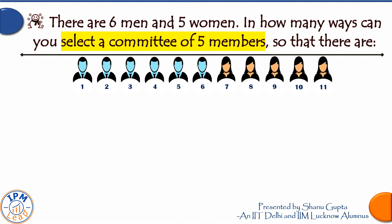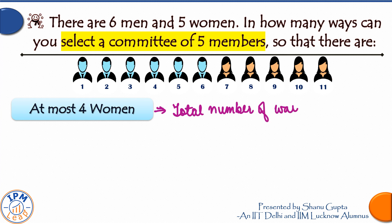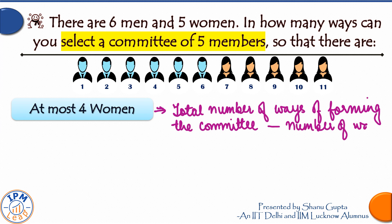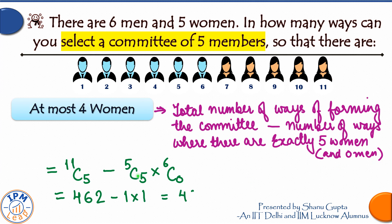Similarly, if at most four women are to be included, breaking it into cases gives too many — zero, one, two, three, or four women. The easier approach: subtract committees with exactly five women from the total. Total = 11C5 = 462. Committees with exactly five women and zero men = 5C5 × 6C0 = 1. Answer: 462 − 1 = 461 ways.